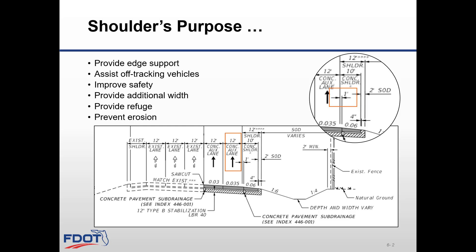Shoulders have been constructed of asphalt and concrete. Sometimes the combination of the similarity between the outside lane and the shoulder and the encroachment of heavy wheel loads have resulted in joint problems between the travel lane and the shoulder.